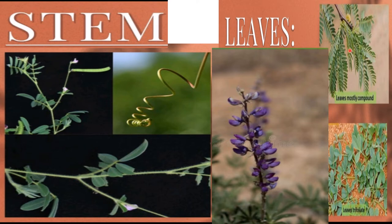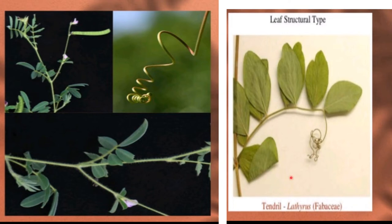Leaves are alternate, stipulate, compound leaf mostly trifoliate. Some of them could have trifoliate leaves. Leaf modification: it is modified partly or wholly into tendrils in case of Lathyrus and Pisum. The leaf base may be pulvinate, that means swollen leaf base. In Pisum and Lathyrus, the stipules are foliaceous and highly developed.